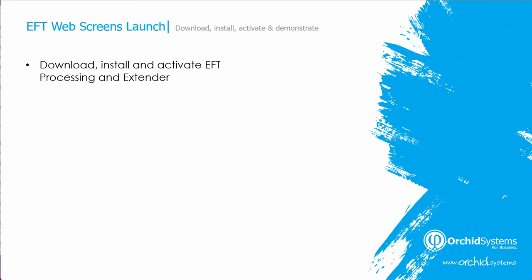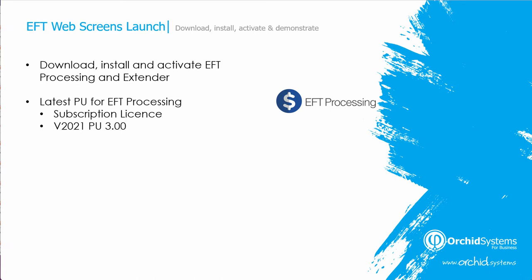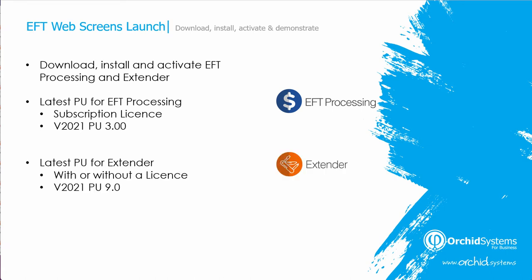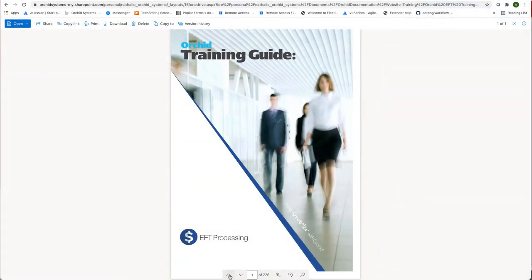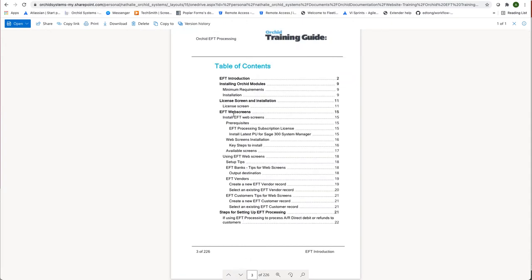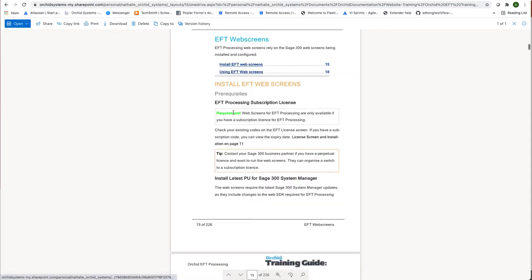We have seen that if we download, install and activate the latest PU of EFT processing, and we have a subscription license for EFT processing, and the latest PU for extender — whether you have a license for extender or not — the web screens are enabled. And all these steps are described in the EFT training guide. If you go to the section on the web screens, it describes how to install the EFT web screens and how to use the EFT web screens.